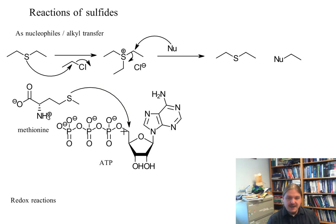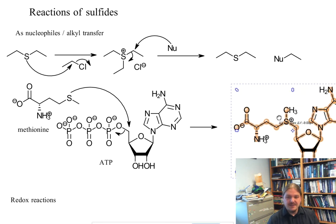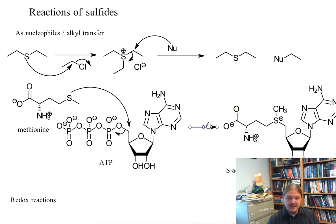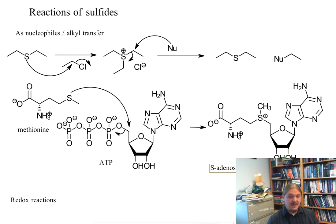So methionine can act as a nucleophile on ATP, kick out the triphosphate anion as a leaving group. And the product of this reaction, S-adenosylmethionine, or sometimes abbreviated SAM,